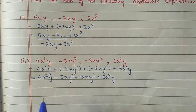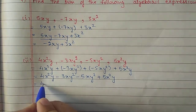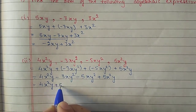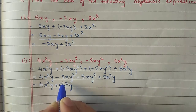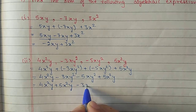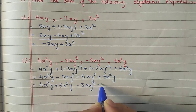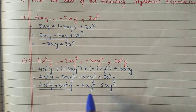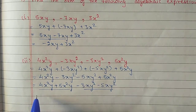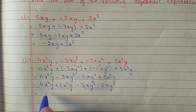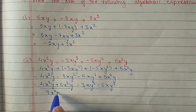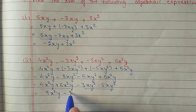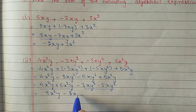Like terms we take together: 4x square y and 5x square y are like, and the xy square terms are like. Simplifying: 4 plus 5 gives 9x square y, and minus 3 minus 5 gives minus 8xy square.